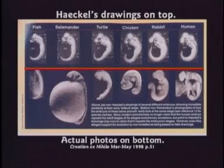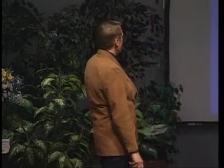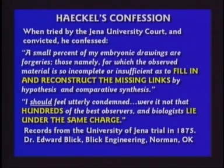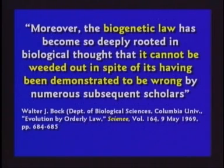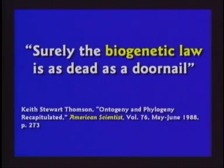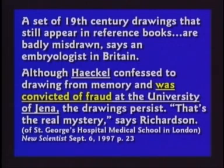Haeckel made giant posters of his fake drawings and traveled all over Germany, telling everybody to believe this new theory because they had the proof right there. He just about single-handedly converted the Germans to believing in evolution, which led to the conclusion that if evolution is true, then maybe one race has evolved farther than the rest — and it must be the Germans. On top are Haeckel's fake drawings; underneath are actual photographs of what he claimed to be drawing. Haeckel lied deliberately. His own university held a trial and convicted him in 1875. He said, 'I should feel utterly condemned, except hundreds of biologists lie under the same charge.' Haeckel's biogenetic law is as dead as a doornail. Proven wrong 1875. He was convicted of fraud — his own university held a trial and convicted one of their own professors of lying.